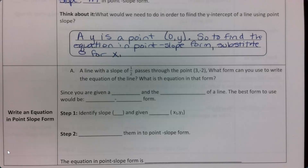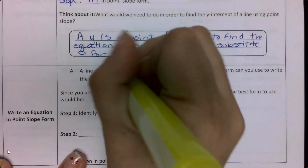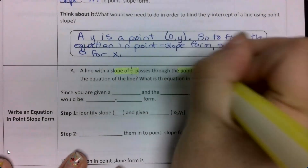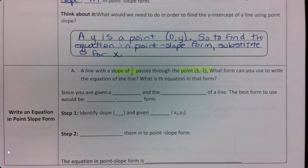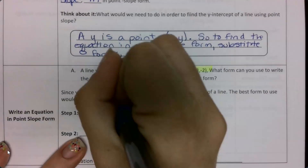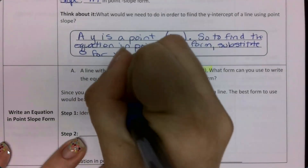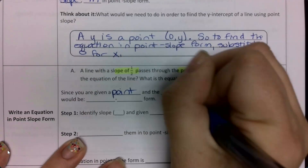A line with a slope of 1/2 passes through the point (3, negative 2). This is the important information. What form can you use to write the equation of a line? We are given a point and a slope.